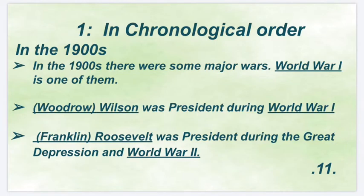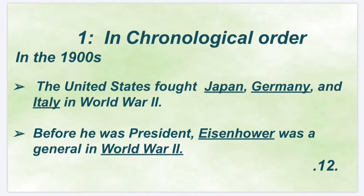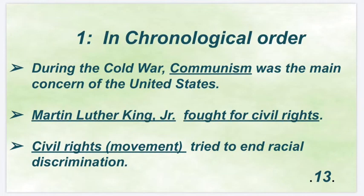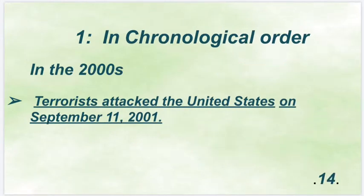In the 1900s, there were some major wars. World War I is one of them. Woodrow Wilson was president during World War I. Franklin Roosevelt was president during the Great Depression and World War II. The United States fought Japan, Germany, and Italy in World War II. Before he was president, Eisenhower was the general in World War II. During the Cold War, communism was the main concern of the United States. Martin Luther King Jr. fought for civil rights. The civil rights movement tried to end racial discrimination. In the 2000s, terrorists attacked the United States on September 11, 2001.